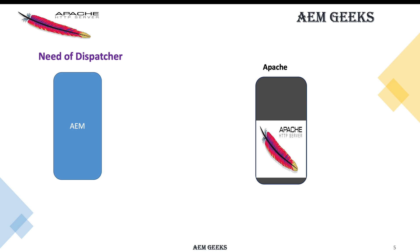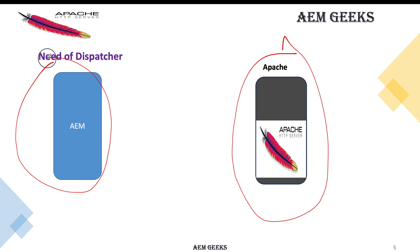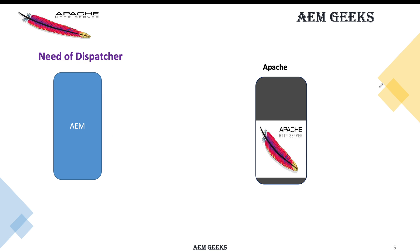The problem is that these are two different applications, two separate software pieces that don't know each other. The web server and AEM publish are individual software that can run independently — Apache can even host static websites without needing AEM. So how do they communicate? Think of it like someone who speaks English and a German speaker — they need a translator who knows both languages.